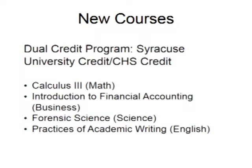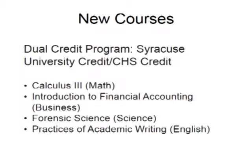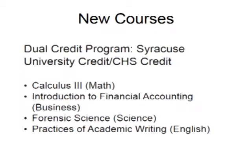I'm very excited to talk to you about new courses that we're offering at the high school. First is our dual credit program with Syracuse University. If you take any of these listed classes and pay the very discounted tuition price to Syracuse University, you will receive both Syracuse University and CHS credit. The classes offered are Calculus III through the Math Department, Introduction to Financial Accounting through the Business Department, Forensic Science through the Science Department, and Practices of Academic Writing through the English Department. All of these classes will receive the same weight as an AP class.